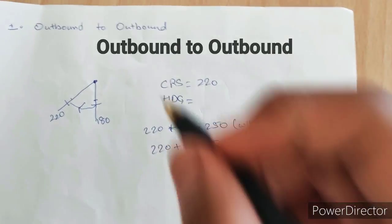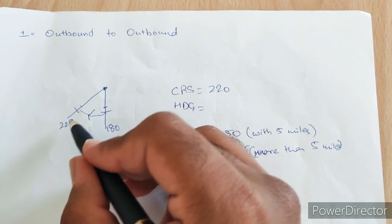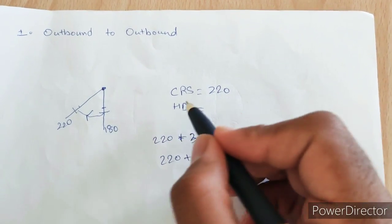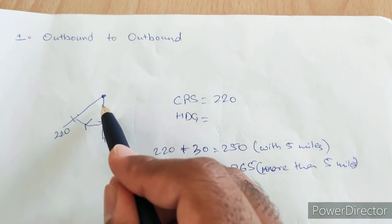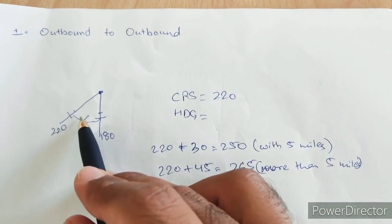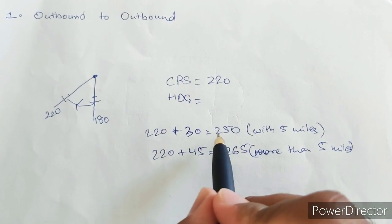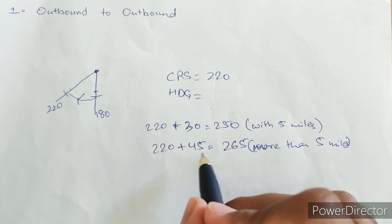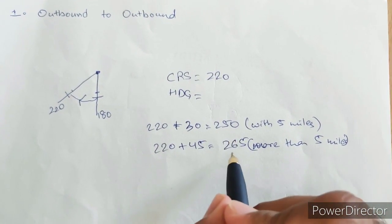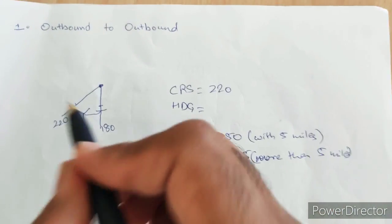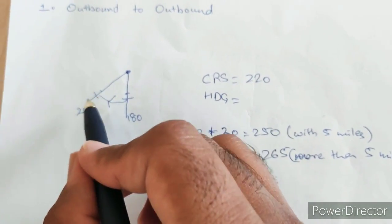Let's talk about outbound to outbound. Let's say you are going outbound on a radial of 180 from a station and you want to go outbound on a radial of 220. You will turn right and change your course to 220, but your heading will not be 220 because you will be flying parallel to that particular radial. To intercept it, your heading will be 250 — that is plus 30 degrees within 5 miles — or 265, which is plus 45 degrees if more than 5 miles. Setting that heading allows you to intercept radial 220 outbound and get back on track.